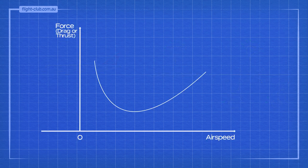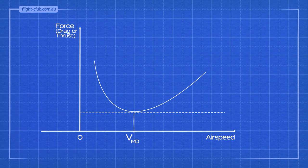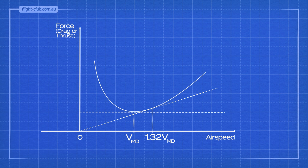This is the drag curve of a typical jet aeroplane. Drag is lowest at the bottom of the curve — this is called minimum drag speed, which is the airspeed for best endurance. For best range, however, we want the highest possible airspeed for the lowest possible drag — we want the highest drag-to-airspeed ratio. The maximum ratio can be found by drawing the tangent from the origin of the graph to the curve. This is the speed for best range. Any other airspeed along the curve reduces the ratio and reduces the range.